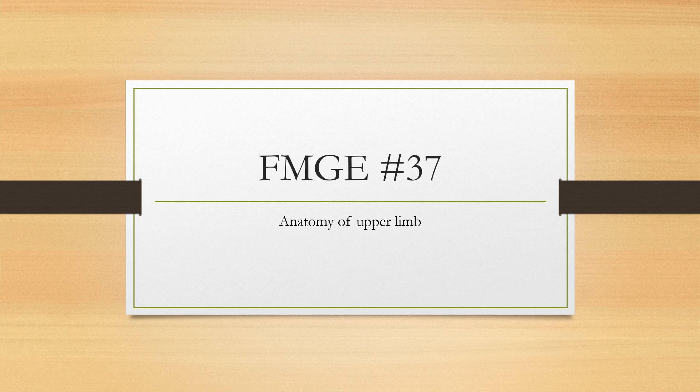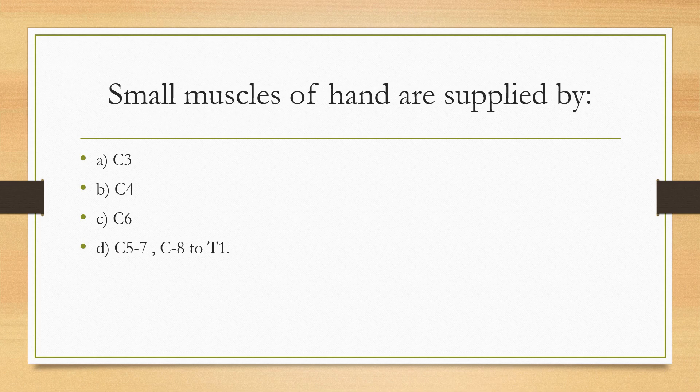Hello guys, it is me back with another video on FMG questions. Today I am going to discuss anatomy of the upper limb. Small muscles of the hand are supplied by — here they have given the root values: C3, C4, C6, C5, C7, and C8 to T1. Pause and try to answer this question because it is slightly difficult.